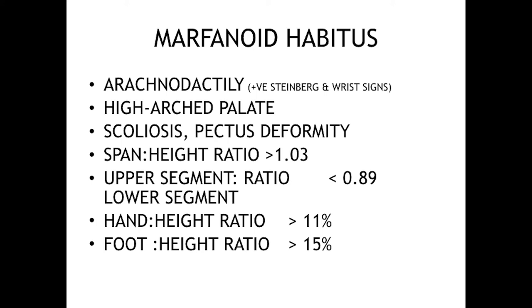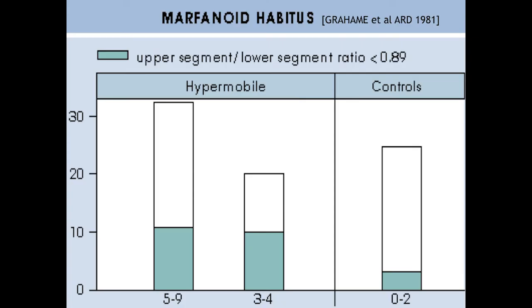Here we see a rundown of the features of marfanoid habitus: arachnodactyly, high arched palate, scoliosis, pectus deformity whether pectus carinatum or excavatum. These measurements — easily performed in the clinic — should be part of every routine examination: span-height ratio, upper segment to lower segment ratios, hand-height ratio, and foot-height ratio. These were all introduced by Victor McKusick and have been very helpful in daily practice. A study I was involved in as far back as 1981 showed that the upper segment over lower segment ratio being less than 0.89 was significantly more common in a small group of hypermobile patients compared with controls.